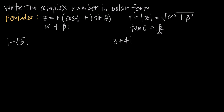In this video, we're talking about how to write complex numbers in polar form. Remember, a complex number is the sum or difference of a real number and an imaginary number. For example, the number 1 minus the square root of 3 times i, where i is the imaginary number. We have the real part, 1, and the imaginary part, negative root 3i. Together, this is a complex number.